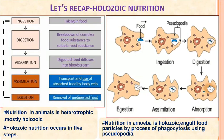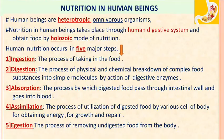Today we will discuss about nutrition in human beings. They also follow holozoic nutrition, which has five major steps. But since a human being is a complex multicellular organism, these steps are performed by specific organs. We will now take up the entire structure which takes care of this nutrition.